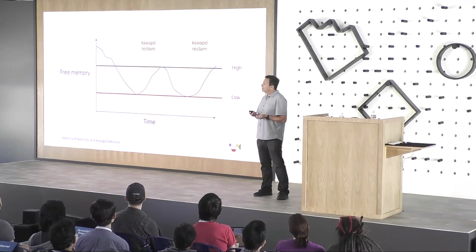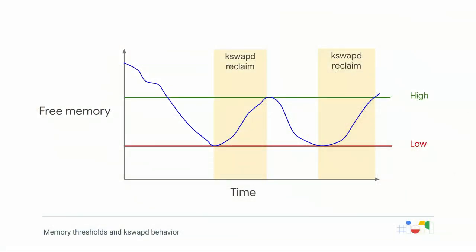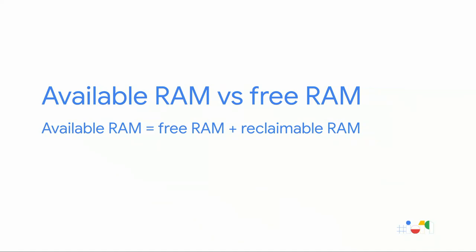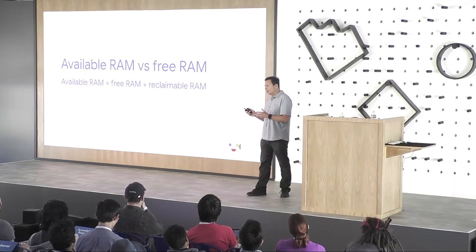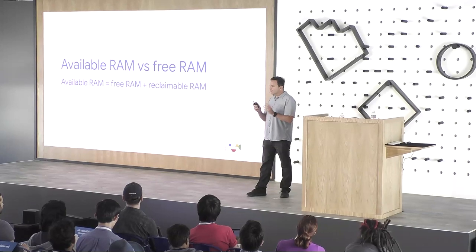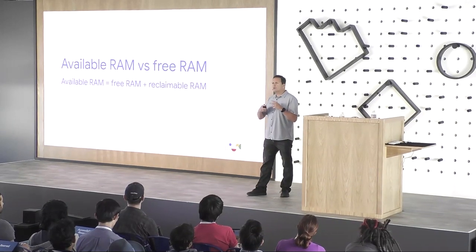Here's an example of how KSwapD reclaims memory. As your application allocates memory over time, free memory decreases until it hits the low memory threshold. At that point, KSwapD kicks in and starts reclaiming pages, so free memory goes back up. But you don't want to keep reclaiming pages your game might need, so it stops — and then if your game keeps allocating, the whole process repeats. I also want to introduce the concept of available RAM versus free RAM: available RAM is the free RAM plus any RAM that can be reclaimed by KSwapD.